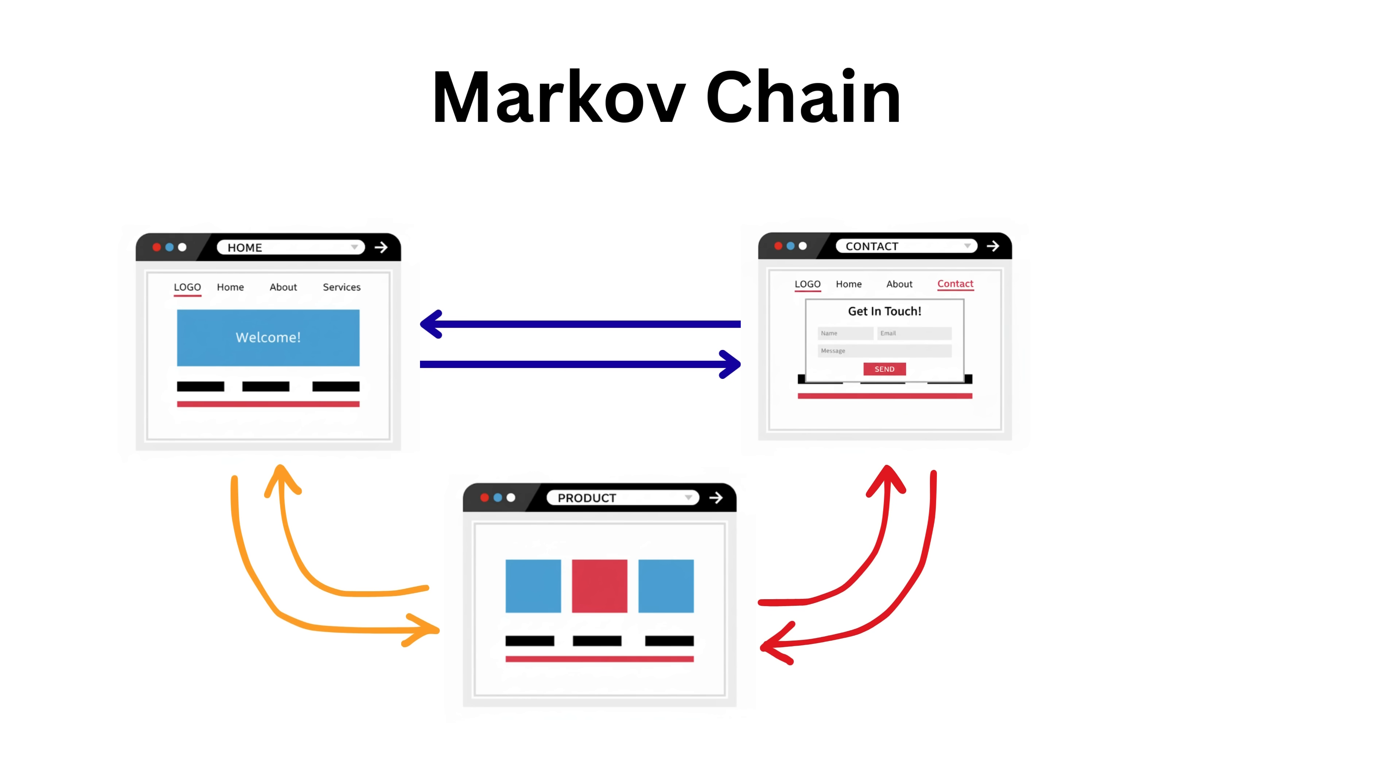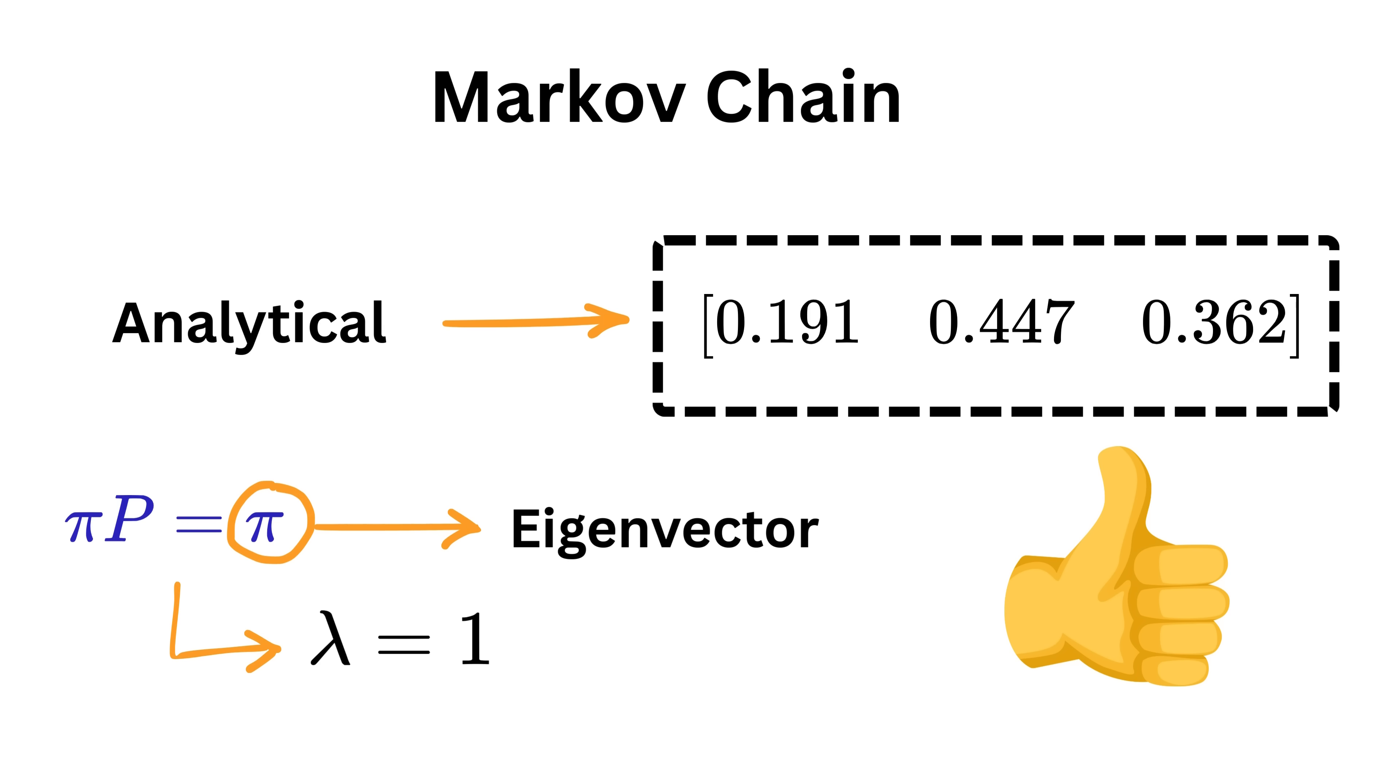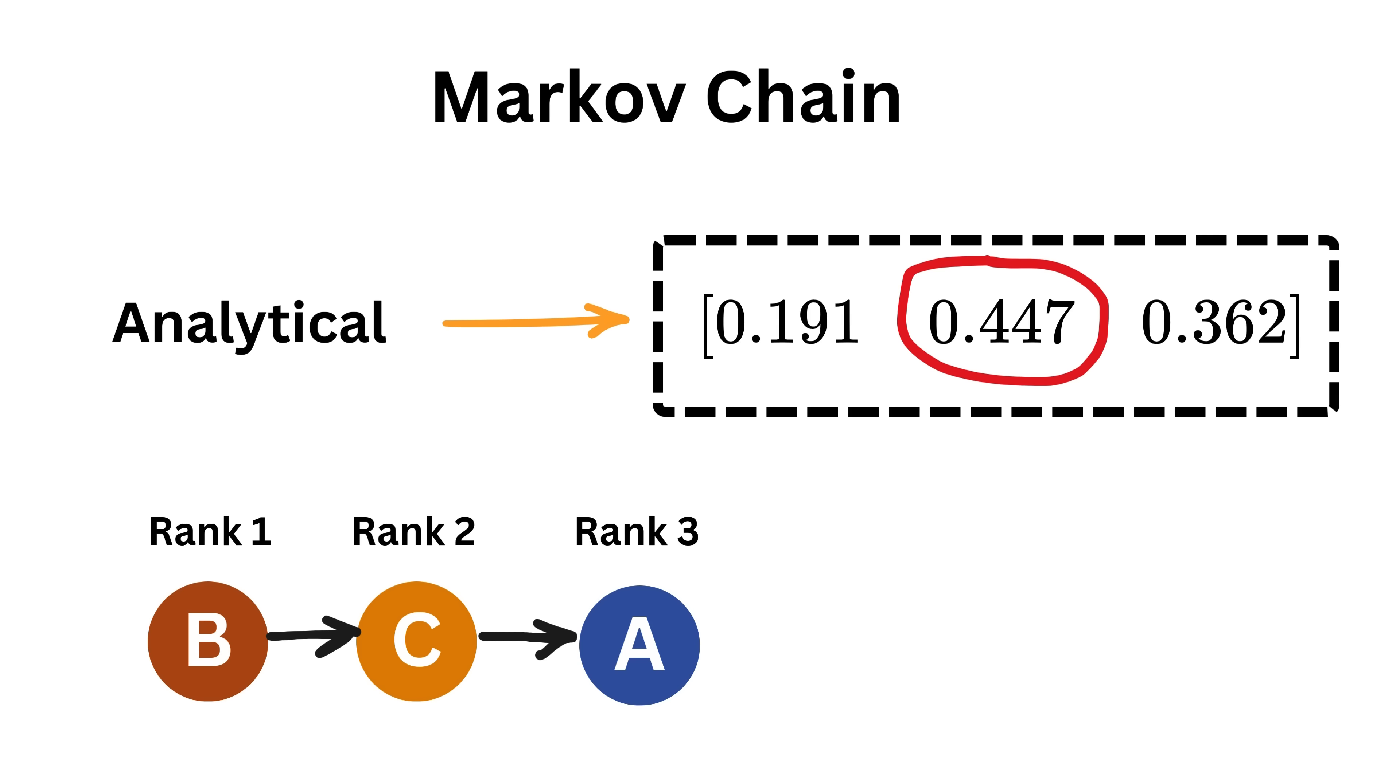If you follow enough links, you eventually land on a stable pattern. A stationary distribution, which mathematically comes from the eigenvector corresponding to the eigenvalue 1. That vector is what decides which pages get the most weight and the one with the highest value wins the top rank.